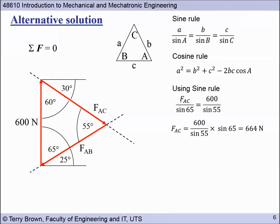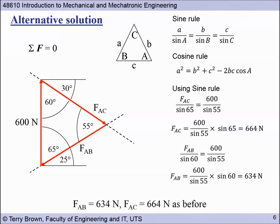So using the sine rule, we can say that FAC over sine 65, so here's our unknown force or unknown length for the force FAC, the opposite angle is 65. So FAC over sine 65 is equal to our known force 600 newtons over its opposite angle and its sine, so 600 over sine 55. So simply rearranging this enables us to find FAC directly, and we can see that we've got the same answer that we had before. Do the same thing for FAB. Its opposite angle this time is 60 degrees, so FAB over sine 60 equals 600 over sine 55. Do the maths and we find FAB equals 634. And they're the same answers that we had before.